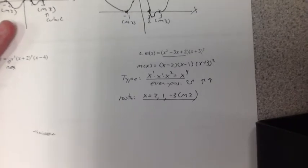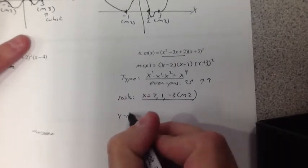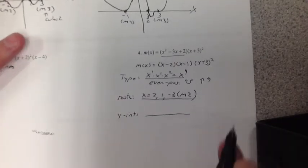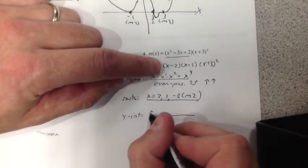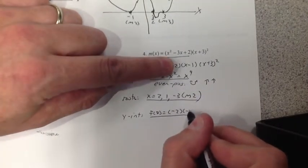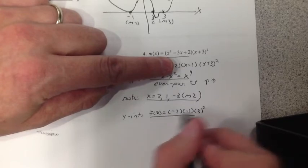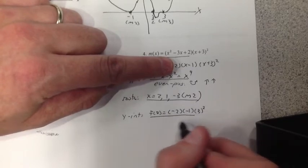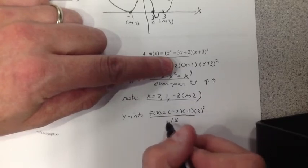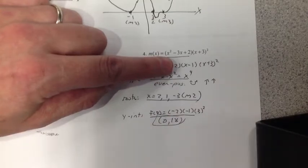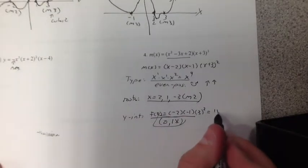Get the y-intercept. Y-intercept. Let x equal 0. I get negative 2, negative 1, 3 squared. That's what? 2 times 9. That's 18. So, we get 0, 18. That's 18 right there.